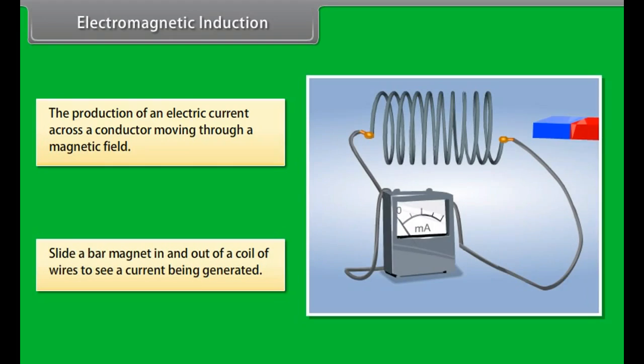Let us try sliding a bar magnet in and out of a coil of wires. You see that the wires generate a current. This is known as electromagnetic induction.